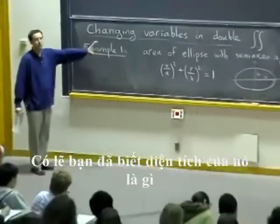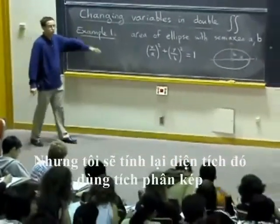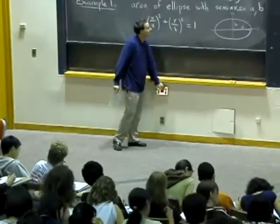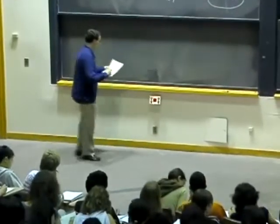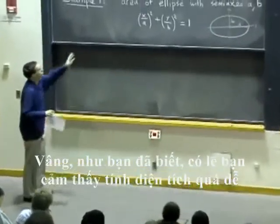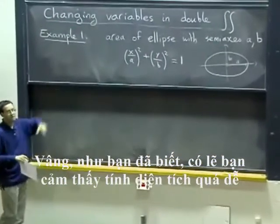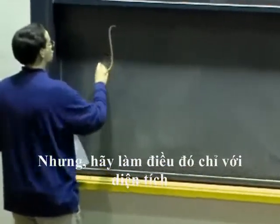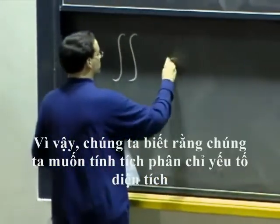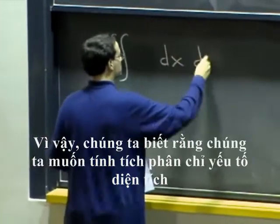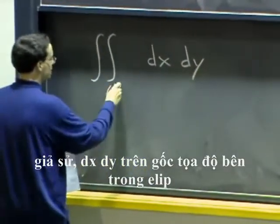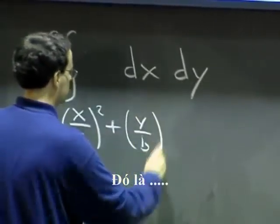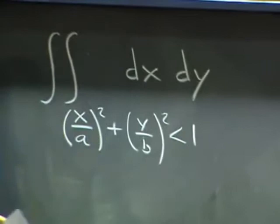So let's say we want to find the area of that. I mean, maybe you know what the area is, but let's do it as a double integral. If you find that area is too easy, you can integrate any function over the ellipse if you prefer. But let's do it just with area. So we want to integrate just the area element, dx dy, over the region inside the ellipse, that's (x/a)² + (y/b)² less than one.